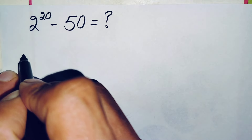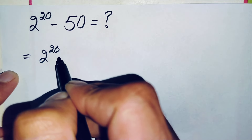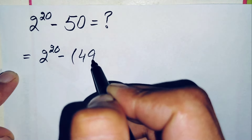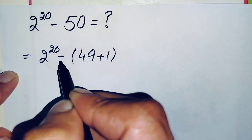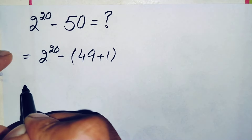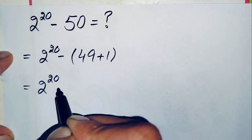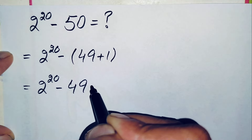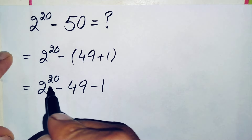First, we can write 50 as 49 plus 1. So the expression becomes 2 raised to power 20 minus 49 plus 1. Next, we distribute the negative sign inside the parenthesis, giving us 2 raised to power 20 minus 49 minus 1.